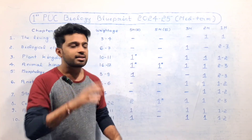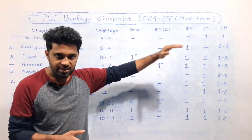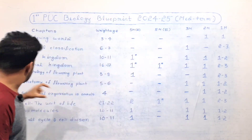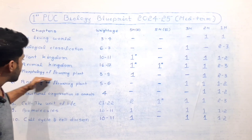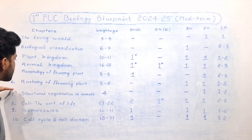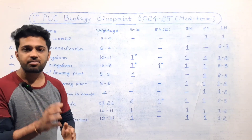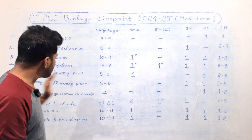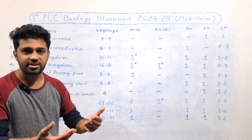Next, in the past chapter, this is the anatomy of the flowering plant and structural organization in animals. This is not the first chapter.